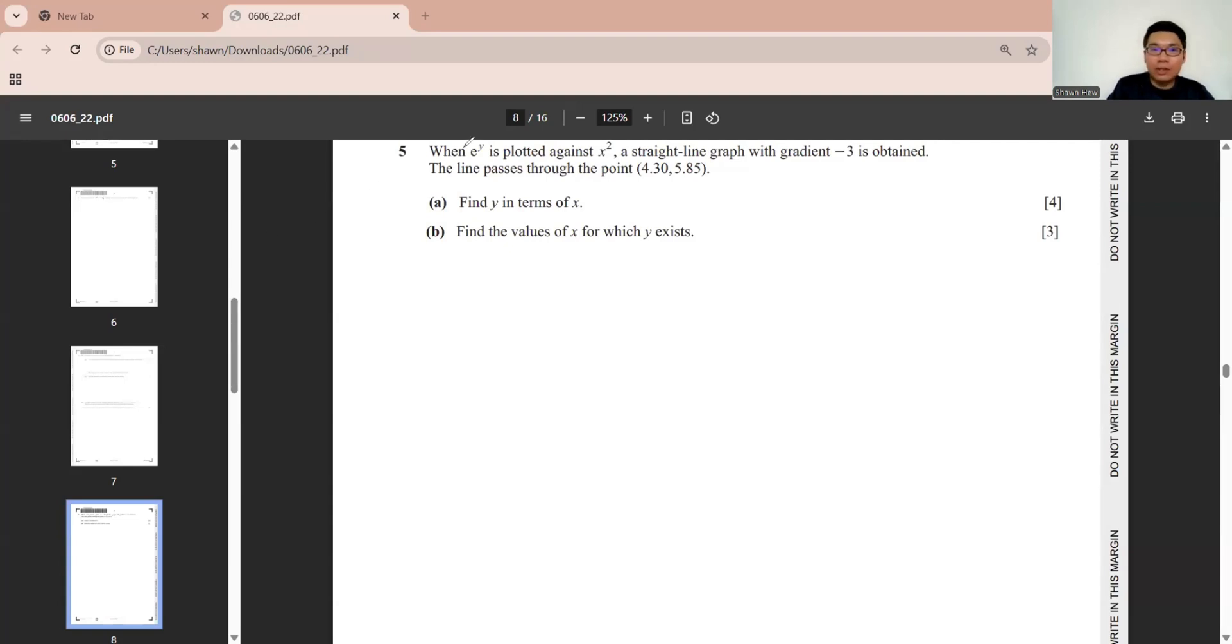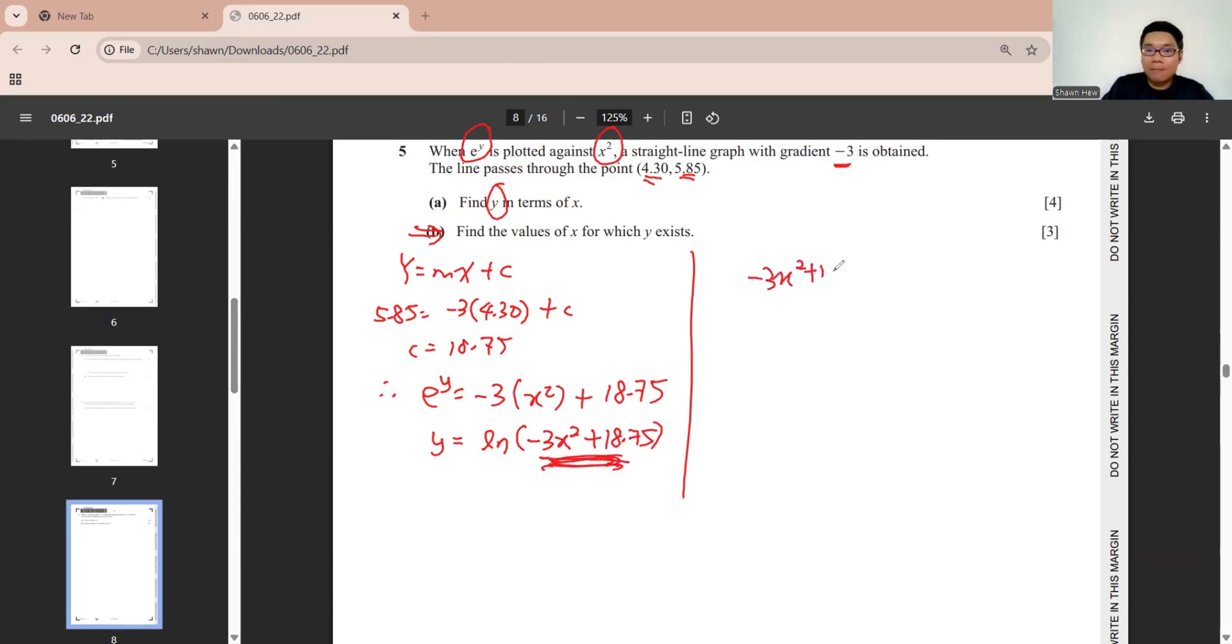Question 5. Straight line equation. They tell you the y-axis is this, x-axis is this, and then the gradient given. And then it passes through this point. So they asked us to find the y in terms of x. In this final straight line equation, y is 5.85, x is 4.3. So c is 18.75. y, which is my e^y, m is minus 3, x is x squared, c is 18.75. Then they want y must be the subject. So we throw e to the right. We become ln. Done first part. Then we see part b. Find the value of x for which y-axis. For y-axis, the baby of ln must be more than 0. Divide by minus 3. We do it as equation. This relationship x is less than. So it's below it in between here and here. And not including because here is not including symbol.